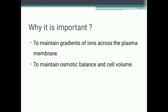A question arises: why is it important for cells to actively transport some molecules? The main importance of active transport is to maintain the gradients of ions across the plasma membrane. Usually in our cells, the concentration of sodium ions is higher outside the cells — approximately 10 times higher outside than inside. Conversely, potassium ion concentration is higher inside the cell than outside. Active transport maintains this ionic gradient.